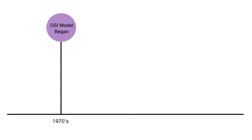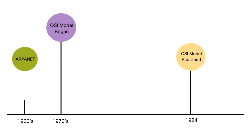Here's what happened. The OSI model's development started in the late 70s and was published in 1984. There was a network called ARPANET, which was sort of the precursor to the Internet. It was developed in the late 1960s. ARPANET stands for Advanced Research Projects Agency Network — a landmark packet switching network established in 1969.